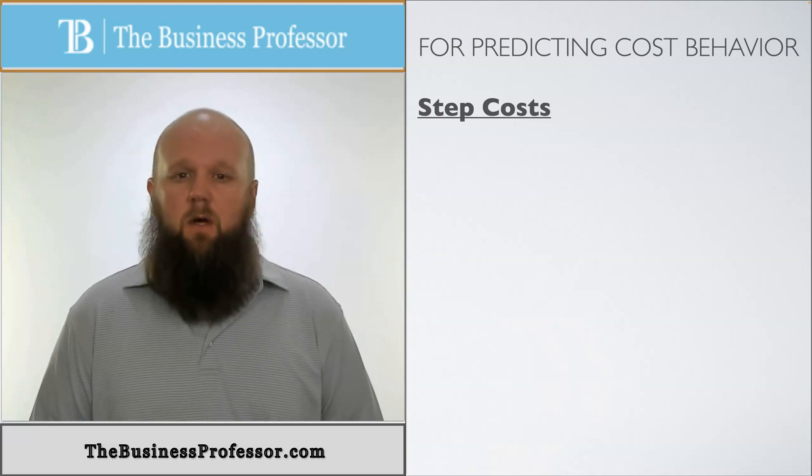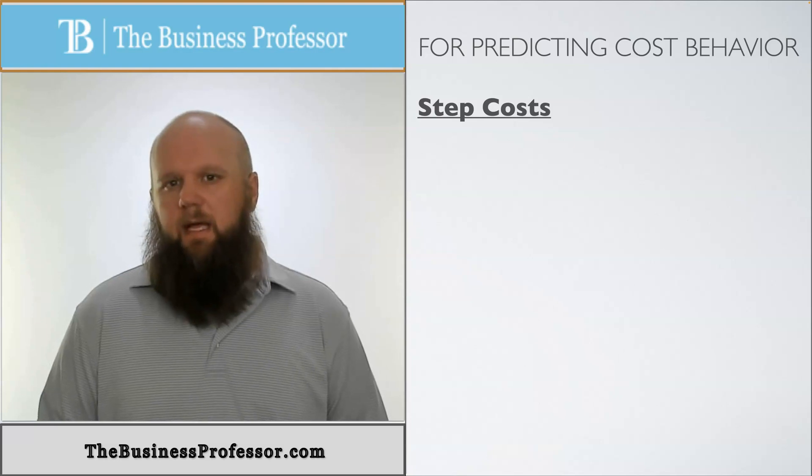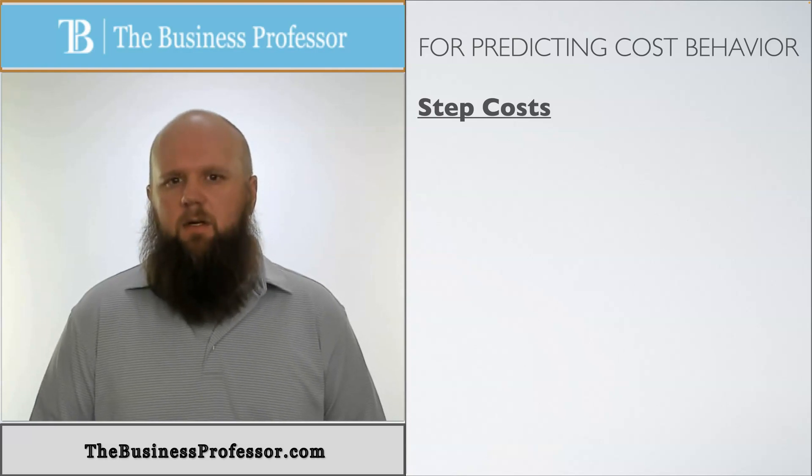Another cost behavior classification is what's called a step cost. As the name implies, I'm guessing you could probably figure out what that graph looks like, but let's talk about what step costs are first.